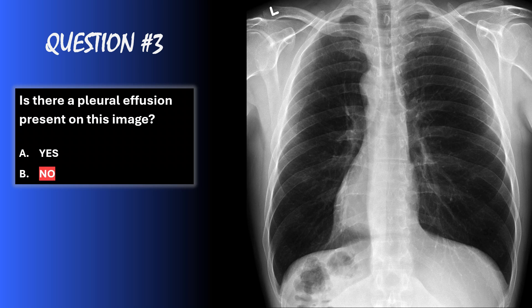No — there is not a pleural effusion here. This is a normal chest x-ray, and you can clearly see the costophrenic angles are sharp and clear of fluid.